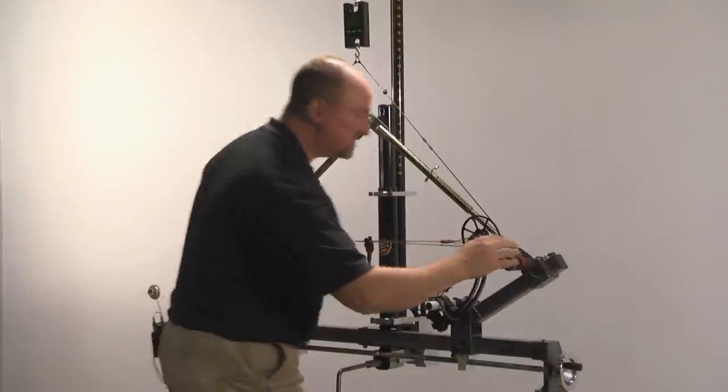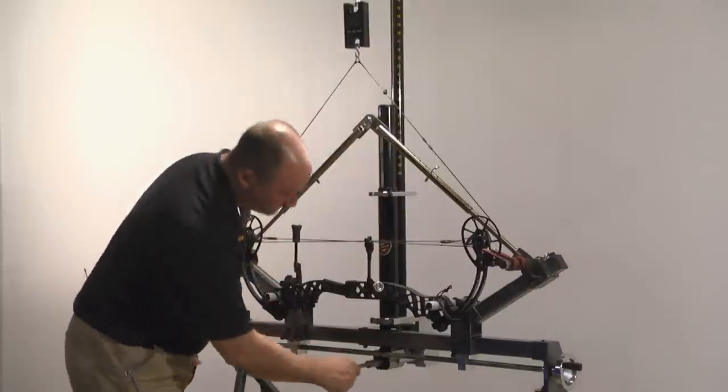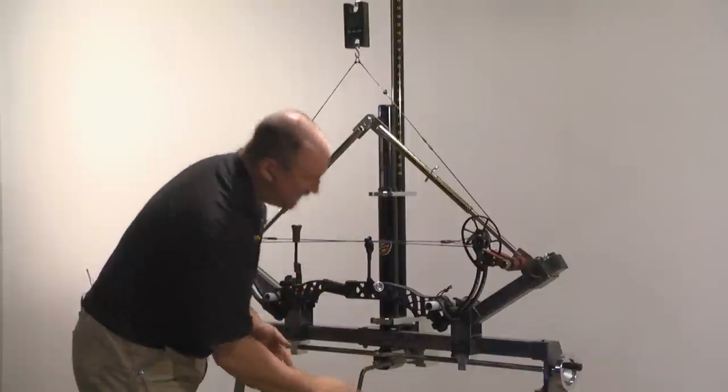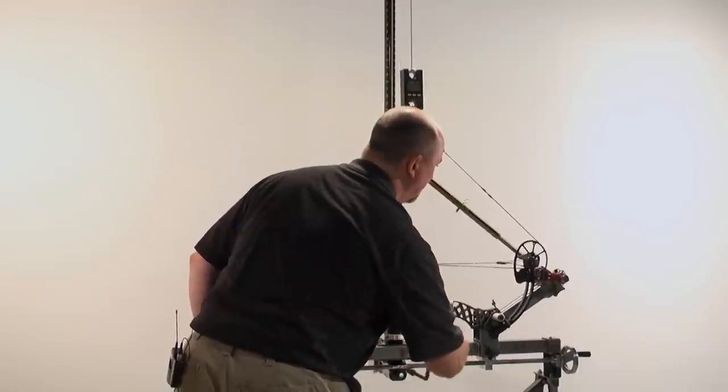So here we've got these limb ears very close, but not touching. Place this on the gearbox of the ProDraw, and let the tension off.